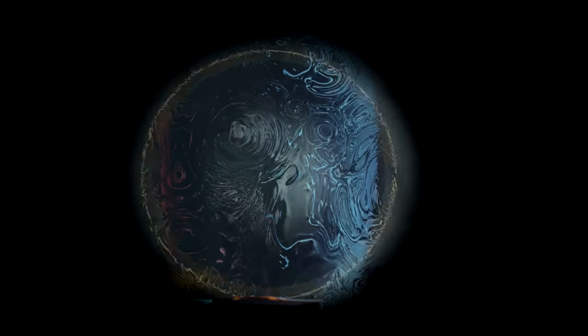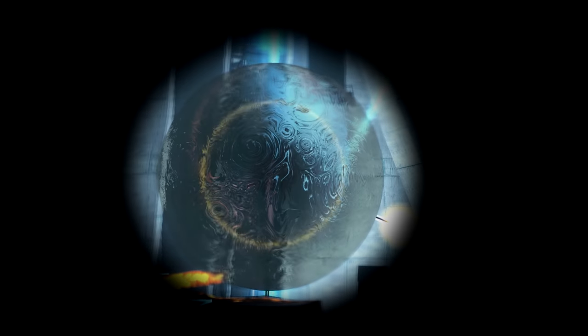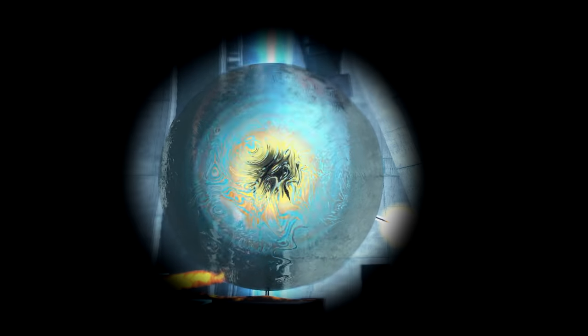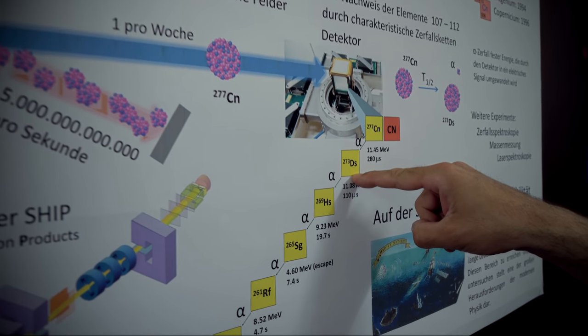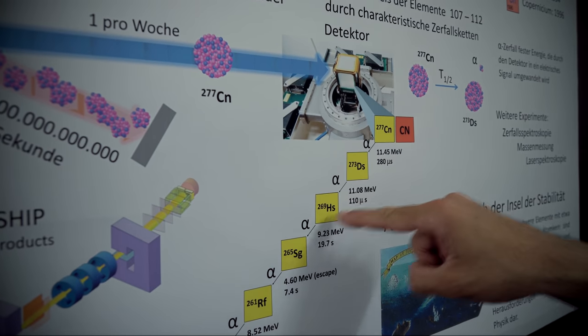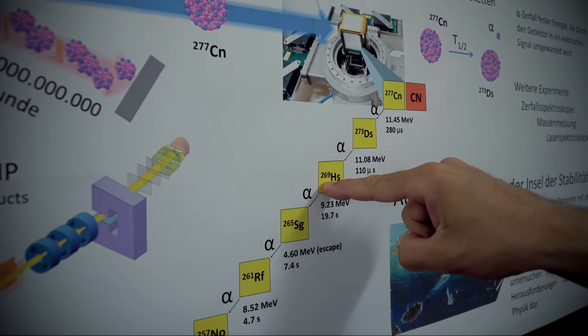Freshly obtained Copernicium-277 atoms exist only 0.7 milliseconds. Then it radiates an alpha particle and becomes Darmstadtium-273 isotope, which keeps breaking down even further, turning into fermium.